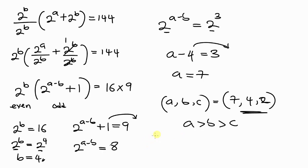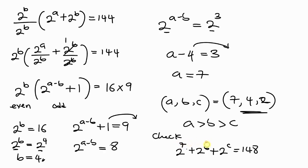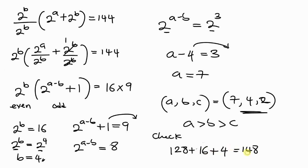To verify: 2^7 + 2^4 + 2^2 = 128 + 16 + 4 = 148, which matches the original equation. Our values for a, b, and c are correct.